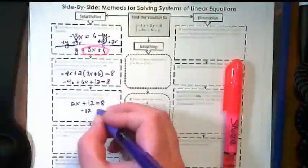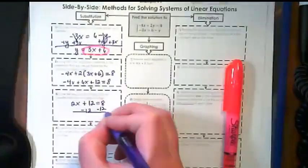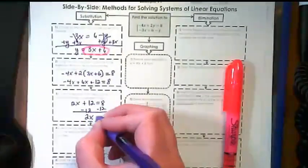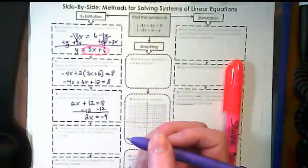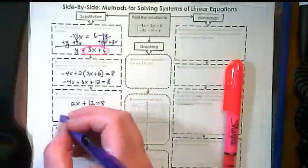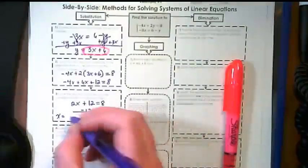We're going to subtract 12 from both sides. And we get 2x equals negative 4. So x would be equal to negative 2.